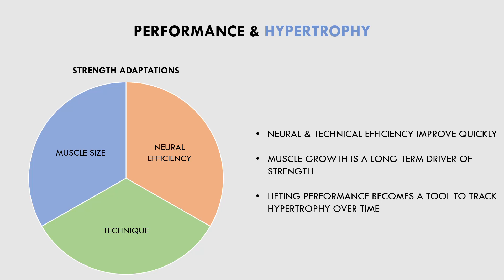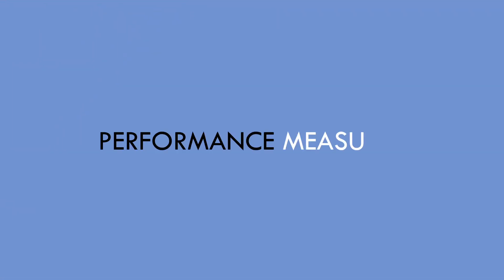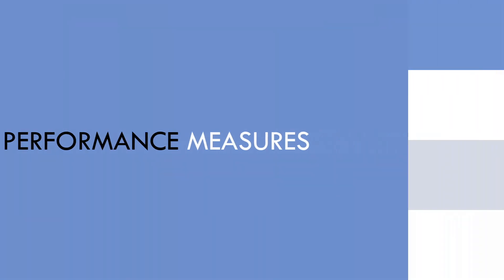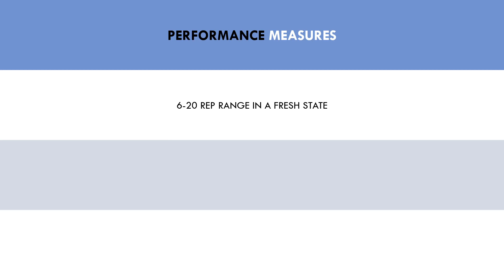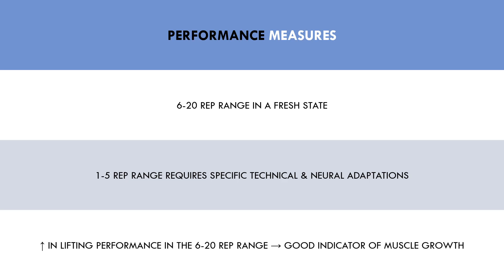So what exact measures of lifting performance are actually reliably indicative of muscle growth occurring? The best measure we have is performance of any standard hypertrophy exercise in the 6-20 rep range when the lifter is fairly fresh. Tracking performance in the 1-5 rep range is probably less reliable because lifting heavy is a specific skill that requires practice, so very heavy loads will be highly influenced by technical and neural adaptations compared with training in more moderate rep ranges. We ideally want to see improvements in load lifted in the 6-20 rep range over time, or increases in rep performance with the same load.